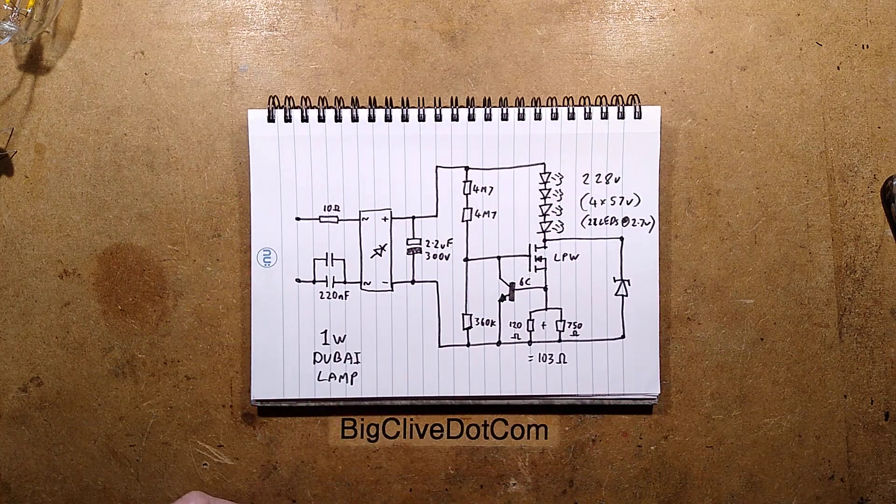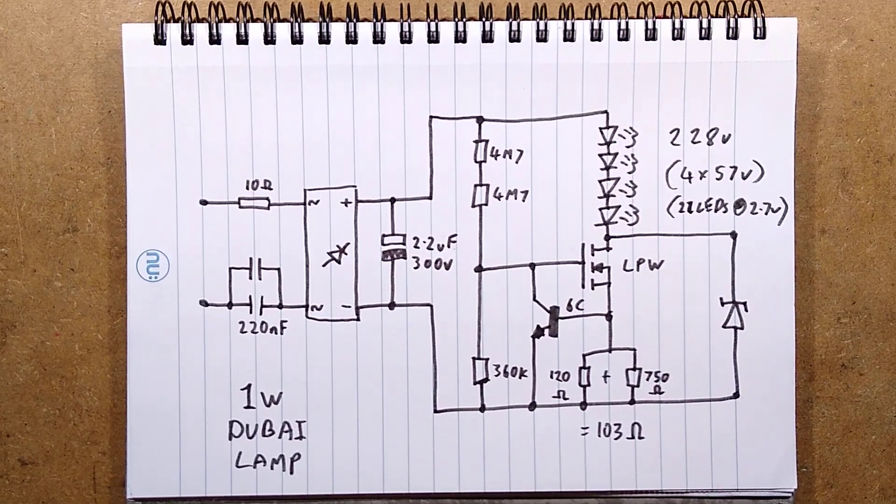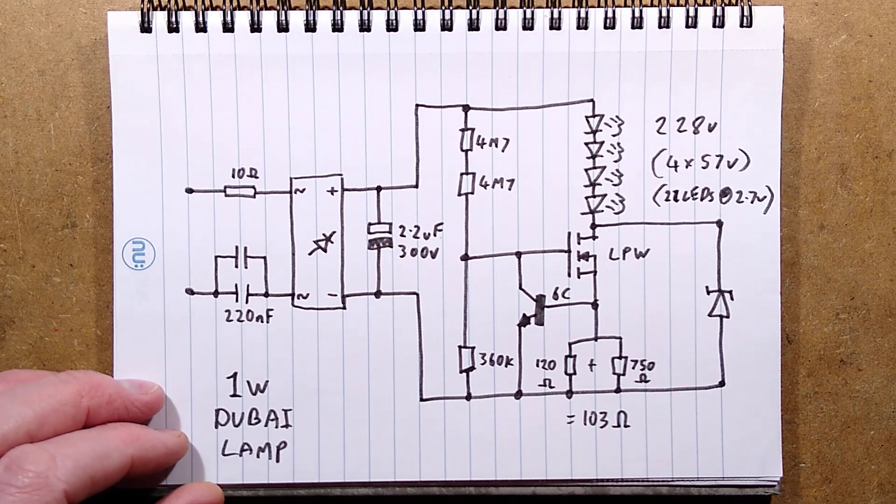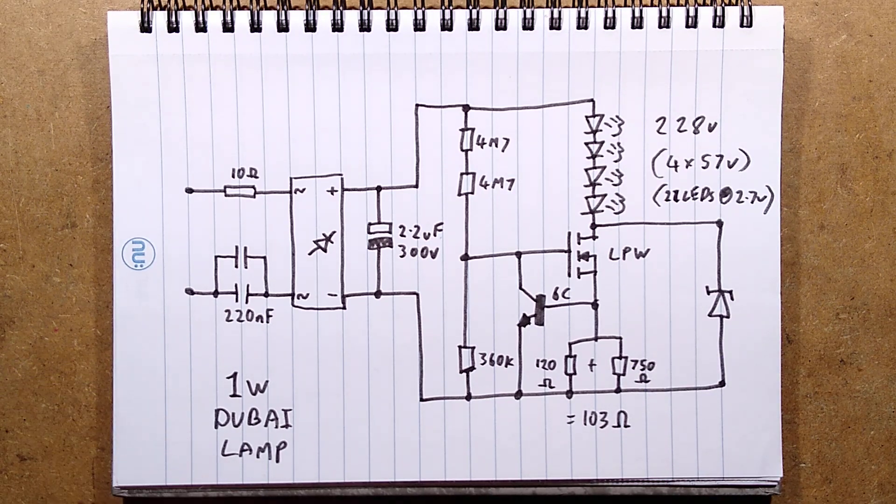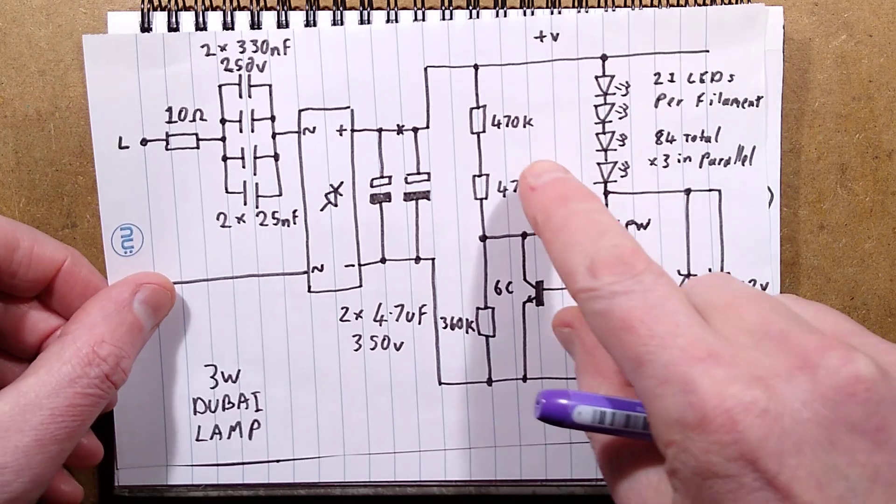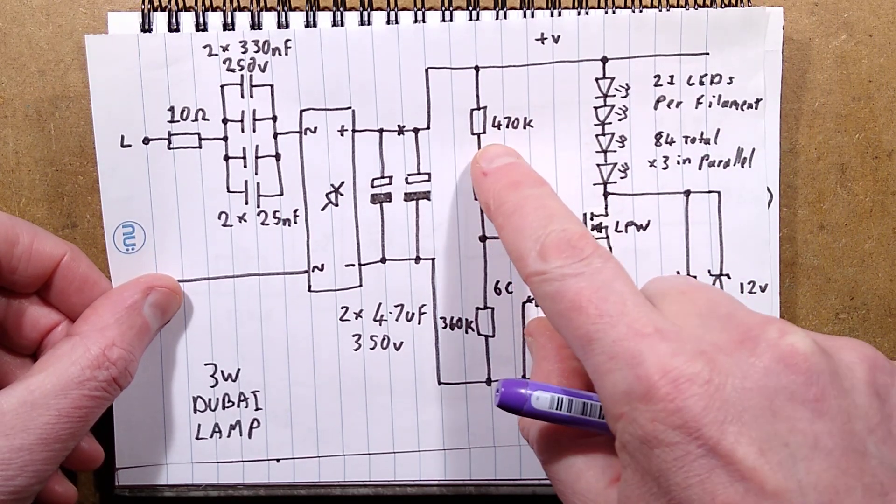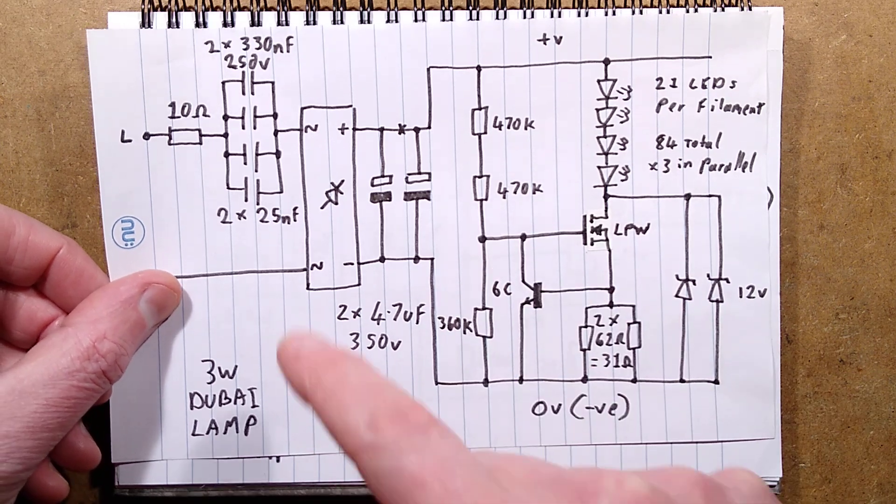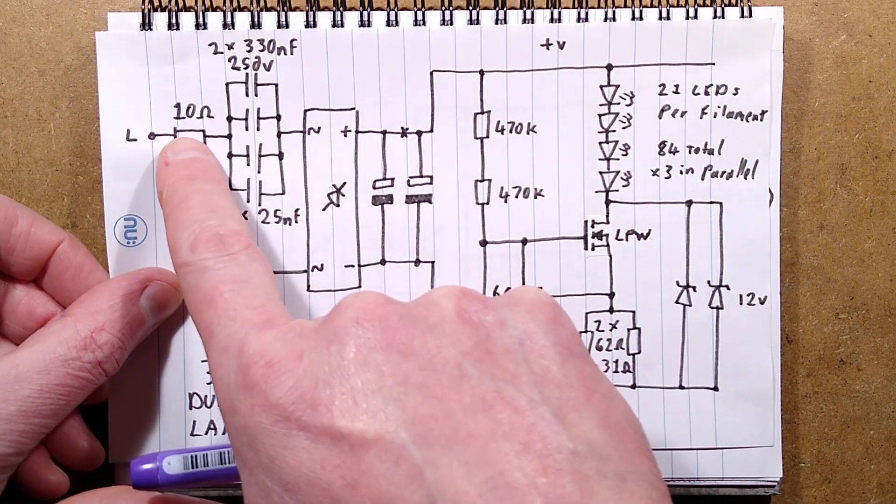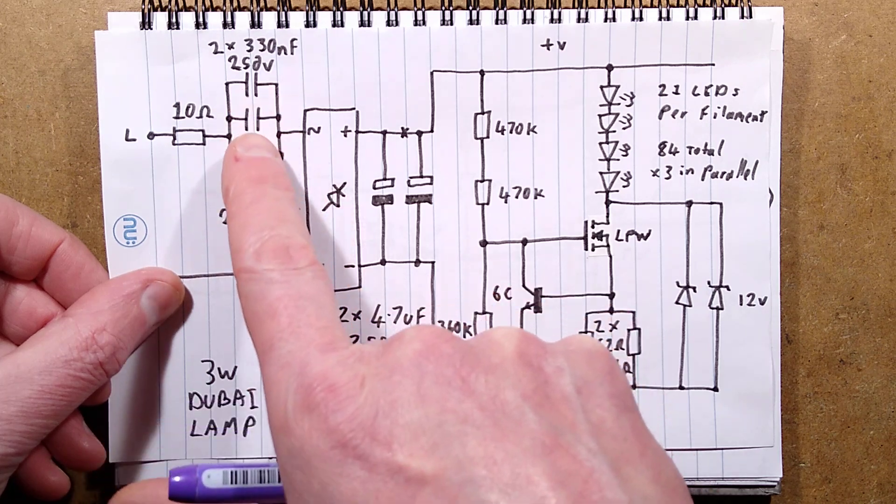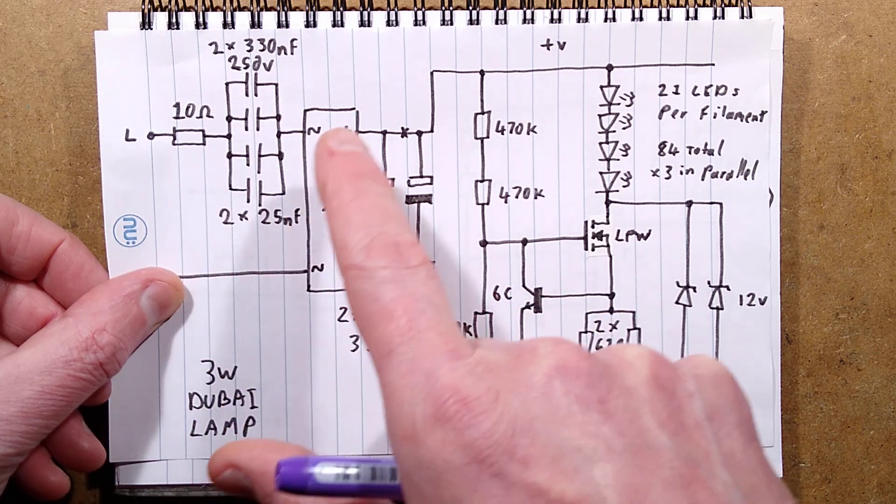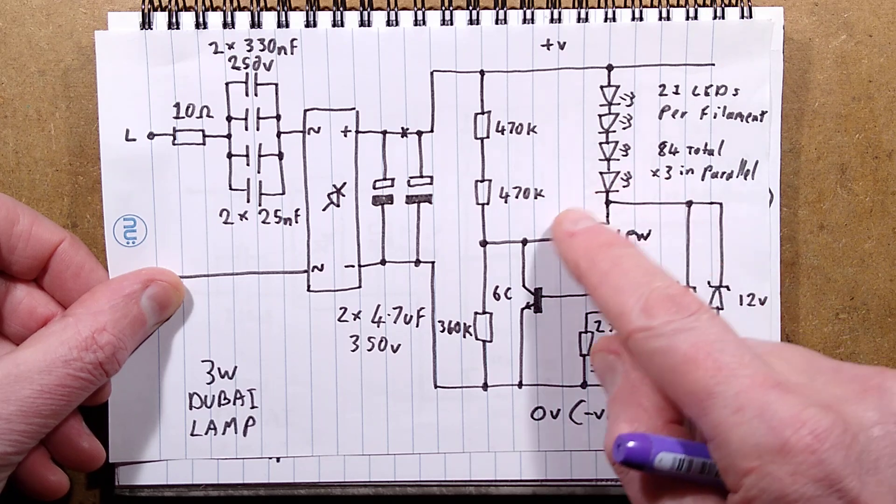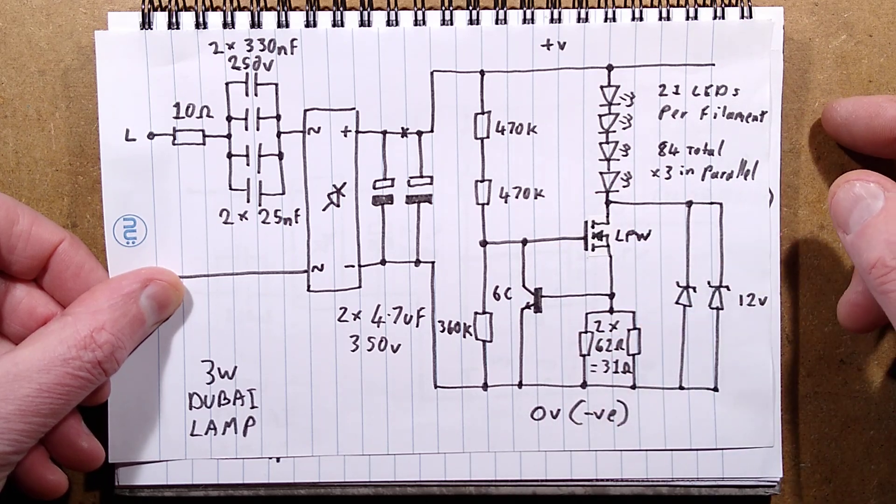I'll talk you through the schematic. If you've seen the 3-watt one, this will seem familiar, including the correction to the mistake I made. I wrote 470k—that should have been 4.7 megohm, but I did correct that in the description. With the 3-watt one: 10-ohm resistor, dropper capacitor including those filter capacitors, rectifier, smoothing capacitor—everything's doubled up though. Then it's got the little current regulator.